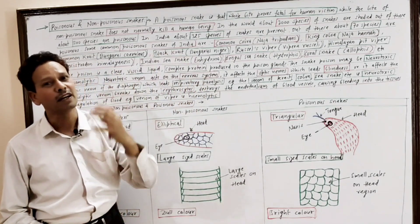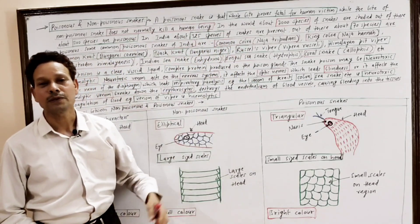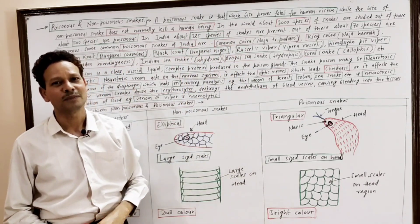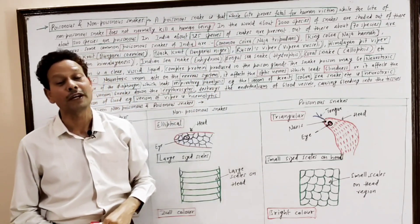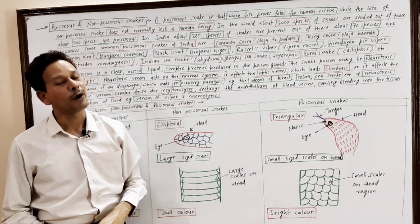In our country India, about 325 species of snakes are reported. Out of these 325 species, only 70 species are poisonous.